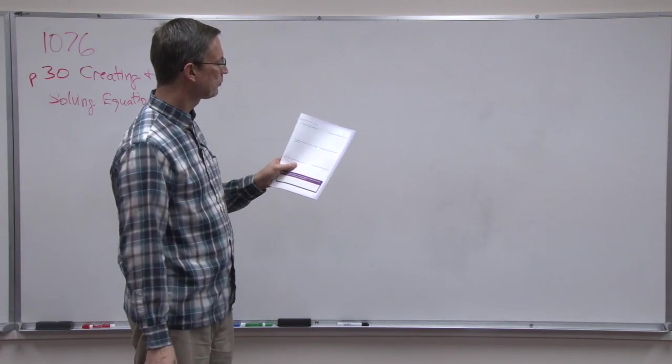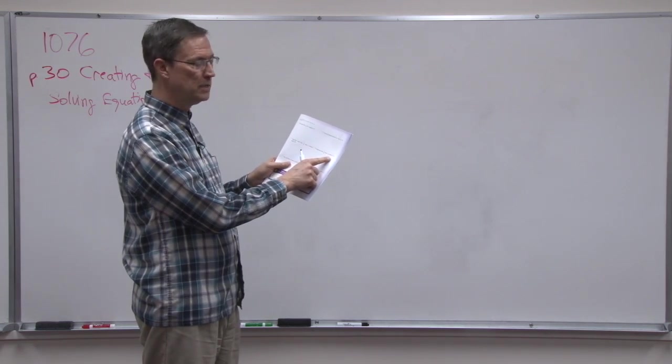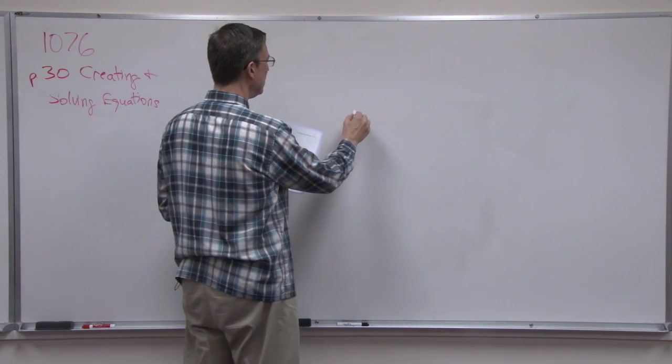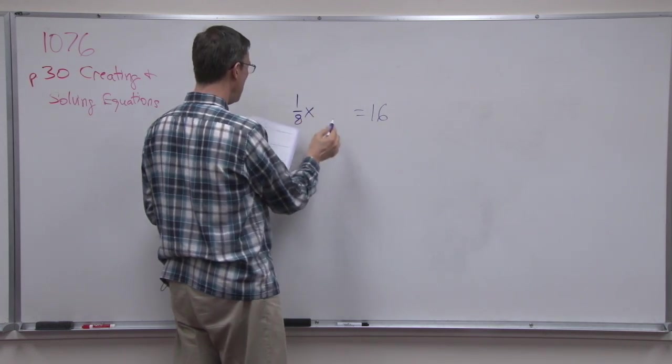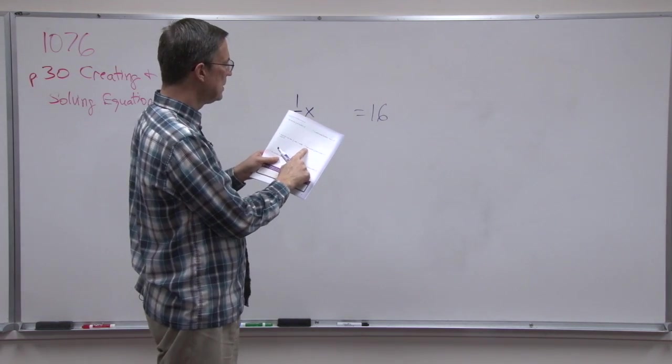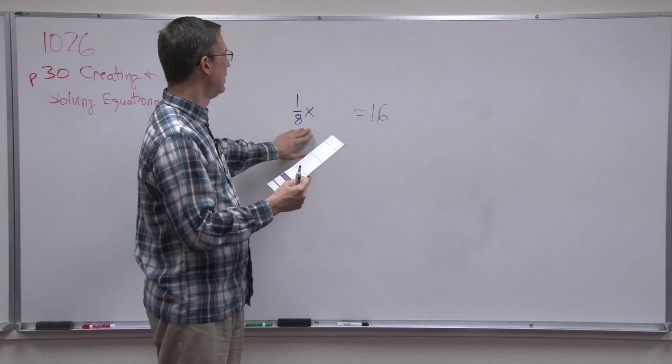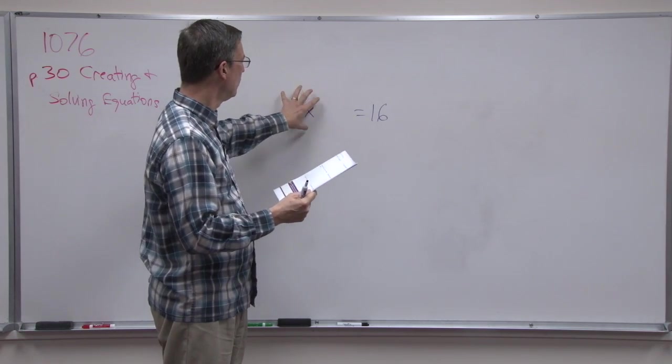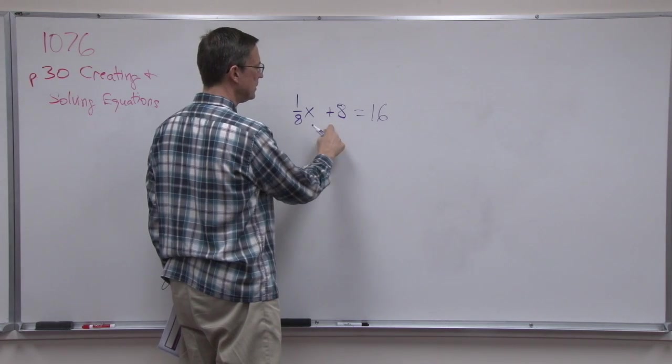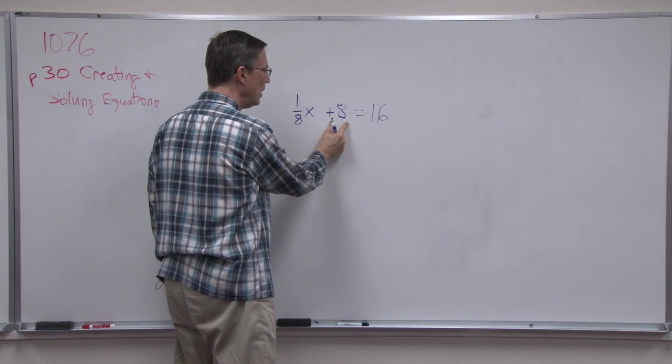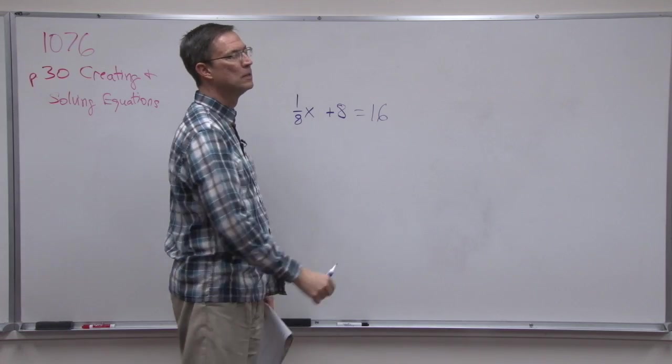Let's look at number 4. 8 more than 1/8 times a number is 16. Again, I like to write the is 16 first. 1/8 times a number, but it says if these are not equal, 1/8 times a number, 8 more than this. 8 more than this equals this. So I need to add 8. You see that? 8 more than 1/8 of a number is 16.